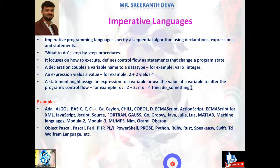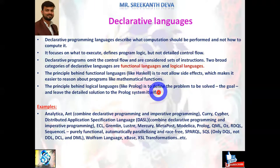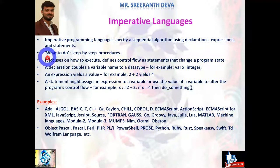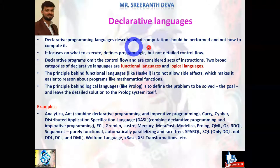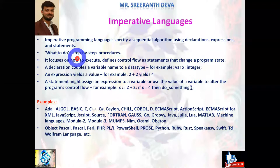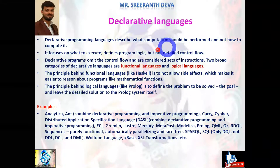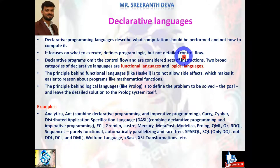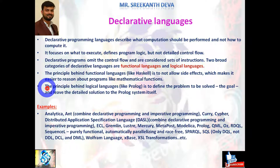Declarative languages describe what computation should be performed, not how to compute it. In imperative we talk about how to do, but in declarative we focus on what computation is required. It focuses on what to execute and defines program logic but not detailed control flow. In imperative programming we work with the complete control flow; in declarative, only what to execute is enough. These principles are generally based on functional languages and logical languages.